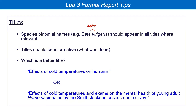Here are some examples — obviously not for our experiment, but maybe you get the idea. Two titles: 'Effect of cold temperature on humans' — that's okay, but that's not going to get you two marks. That might be a good headline for a newspaper journalist, but for scientific technical writing I want details and specifics. The other one says 'Effect of cold temperatures and exams on mental health,' which is better because it mentions both variables.